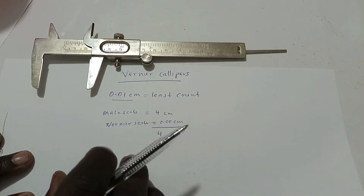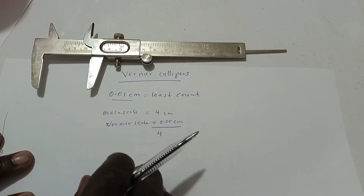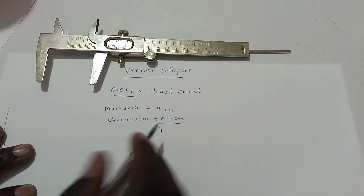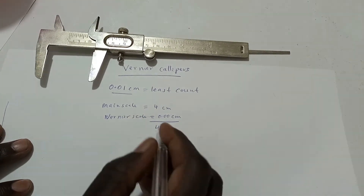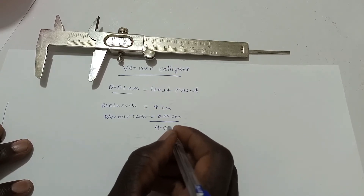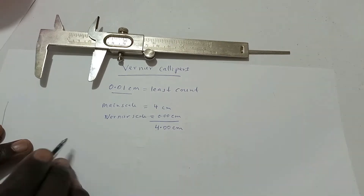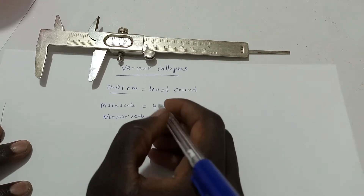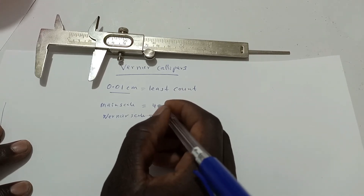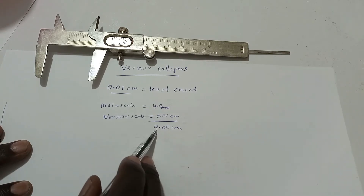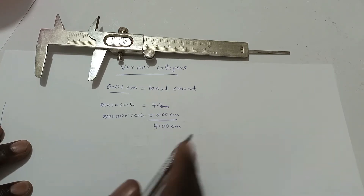The Vernier calipers can measure up to two decimal places. That means all readings when using Vernier calipers should be given to two decimal places. So the reading here will be 4.00 centimeters — the main scale gives 4.0 and you add 0.00, giving 4.00 centimeters.